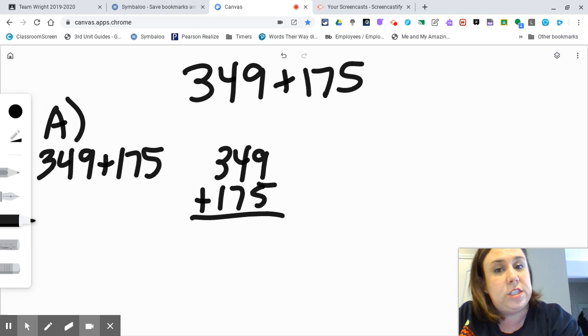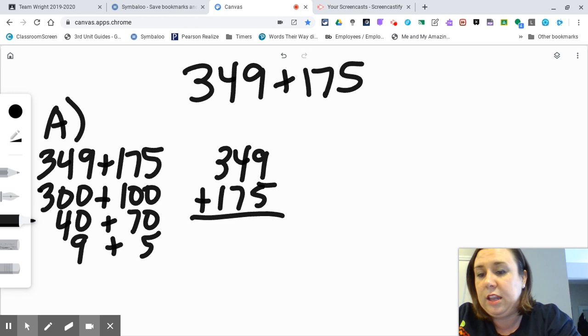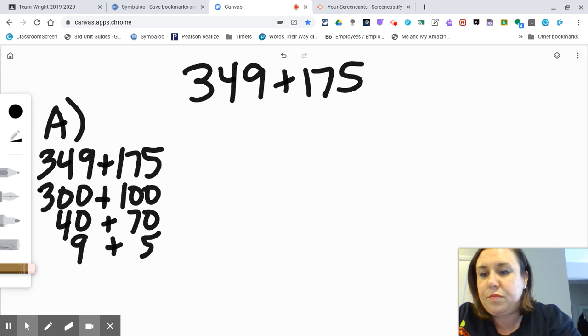When I do it horizontally, I always just start with the hundreds because that's the way the number is read: 349 plus 175. Over here, and I didn't leave myself enough space, let me scoot it over a little bit. Over here I'm going to do the same thing.